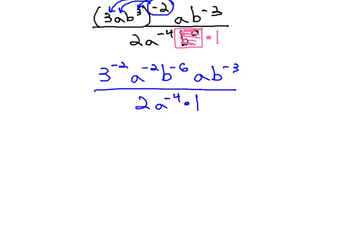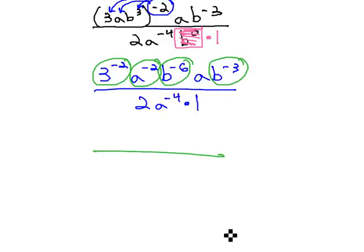Now that we've used the power rules, we're ready to simplify our negative exponents. Notice the 3 has a negative exponent, so does the a, b, and another b. When we move all of those, the 3 squared moved down, the a squared moved down, the b^6 moves down, and the b^3 moved down.